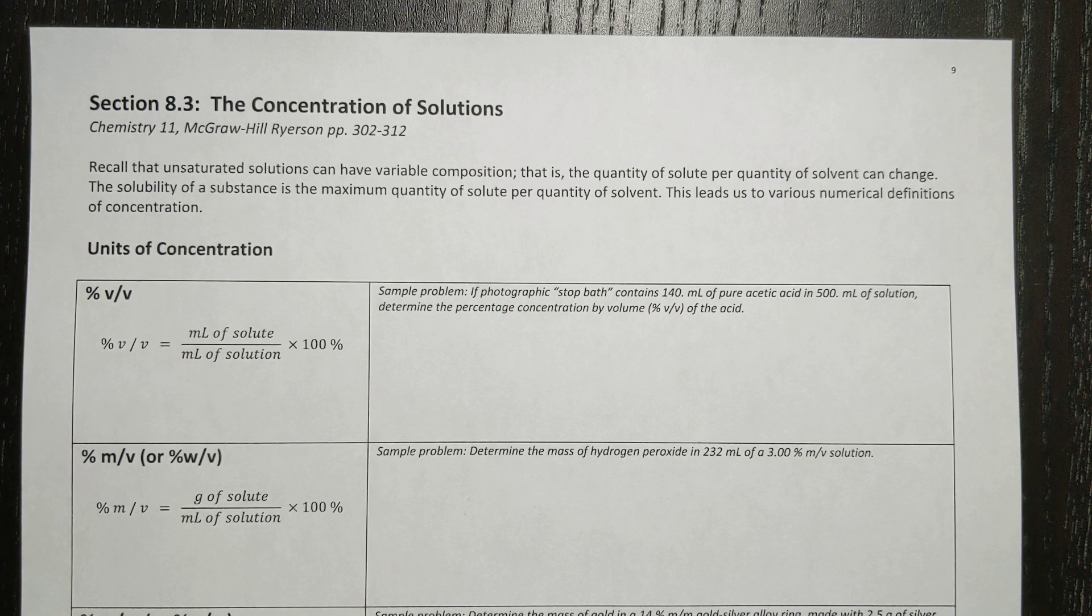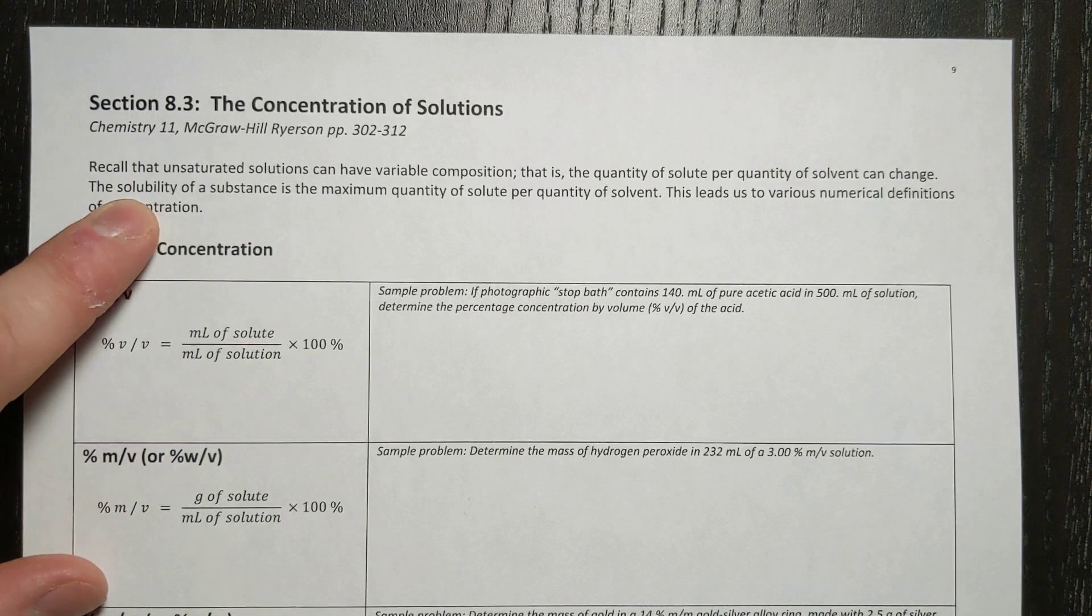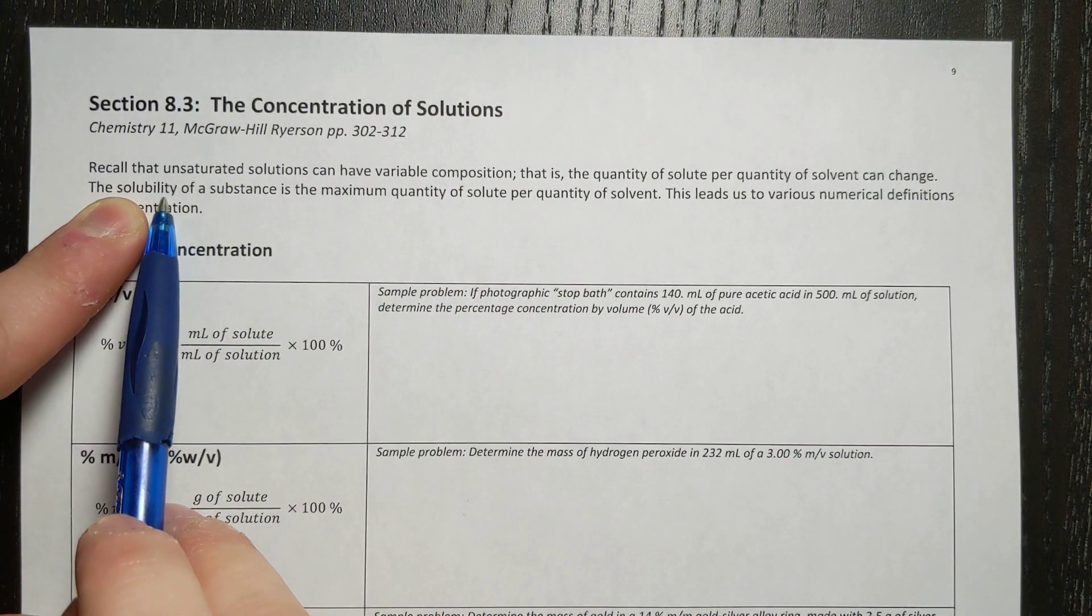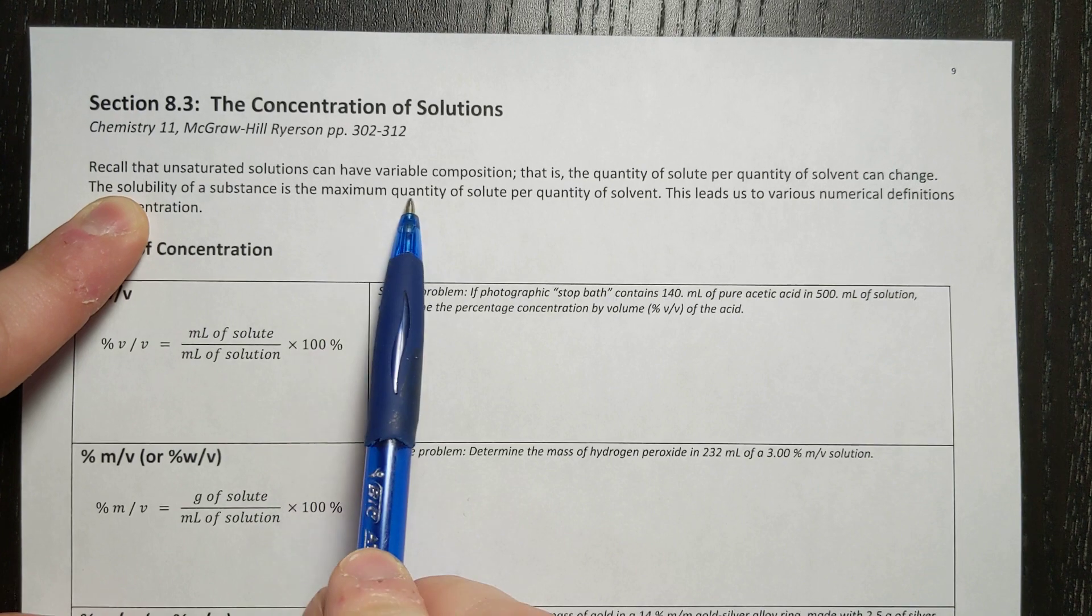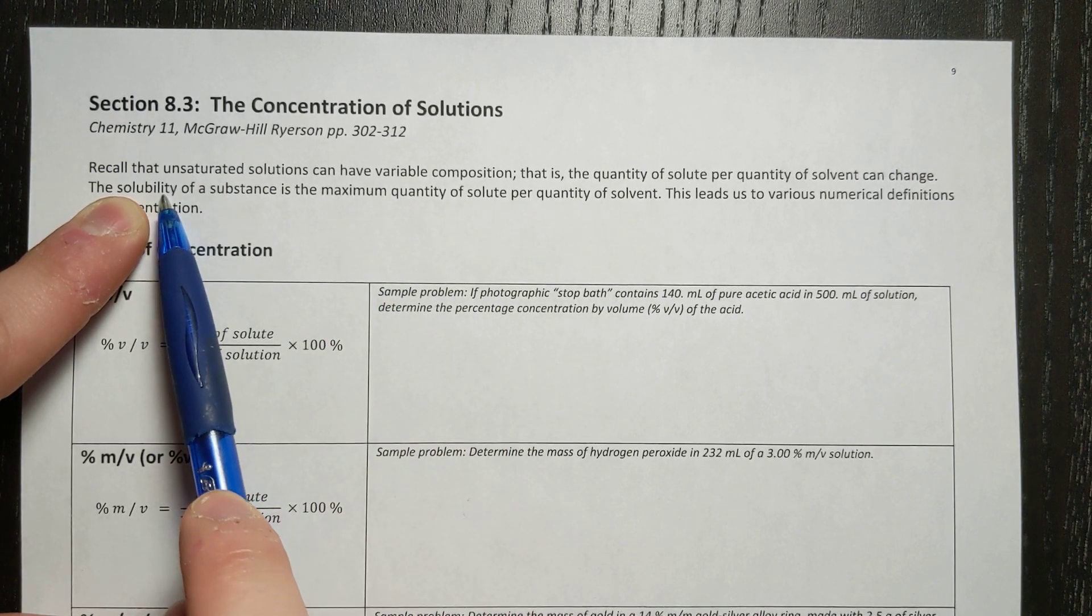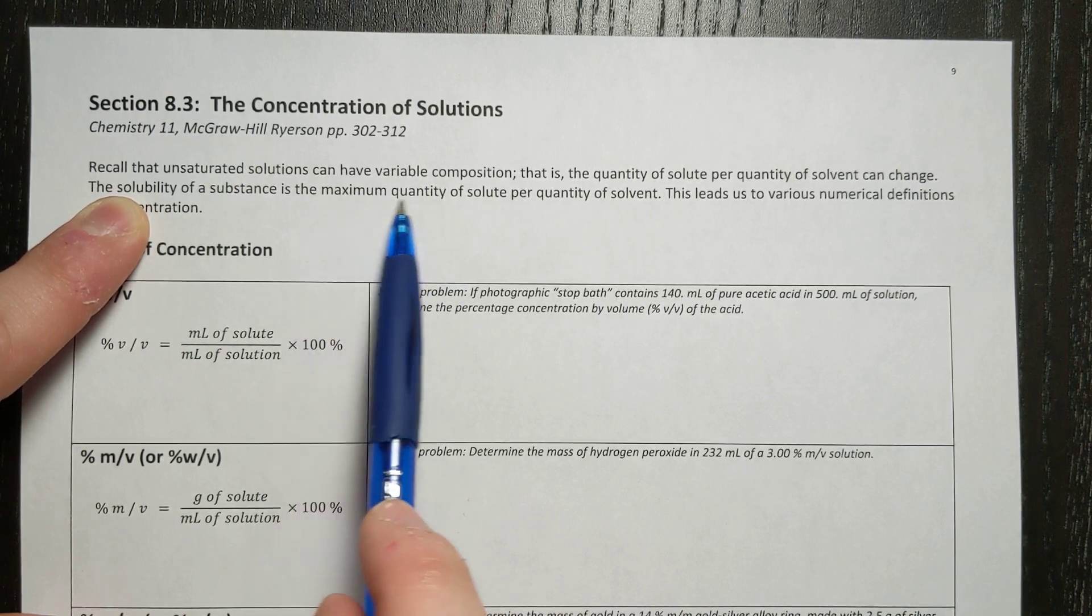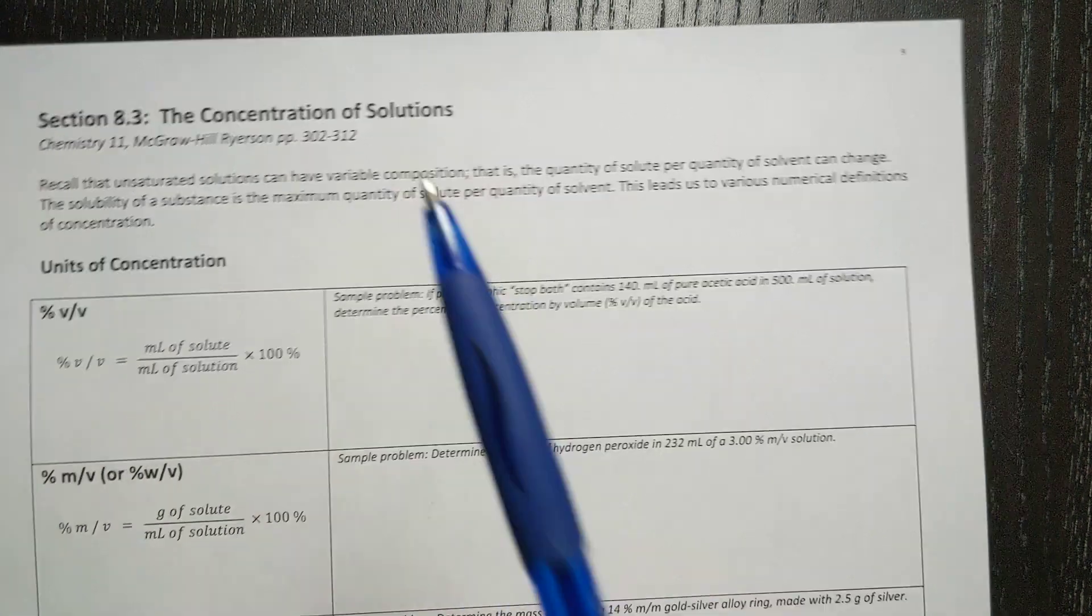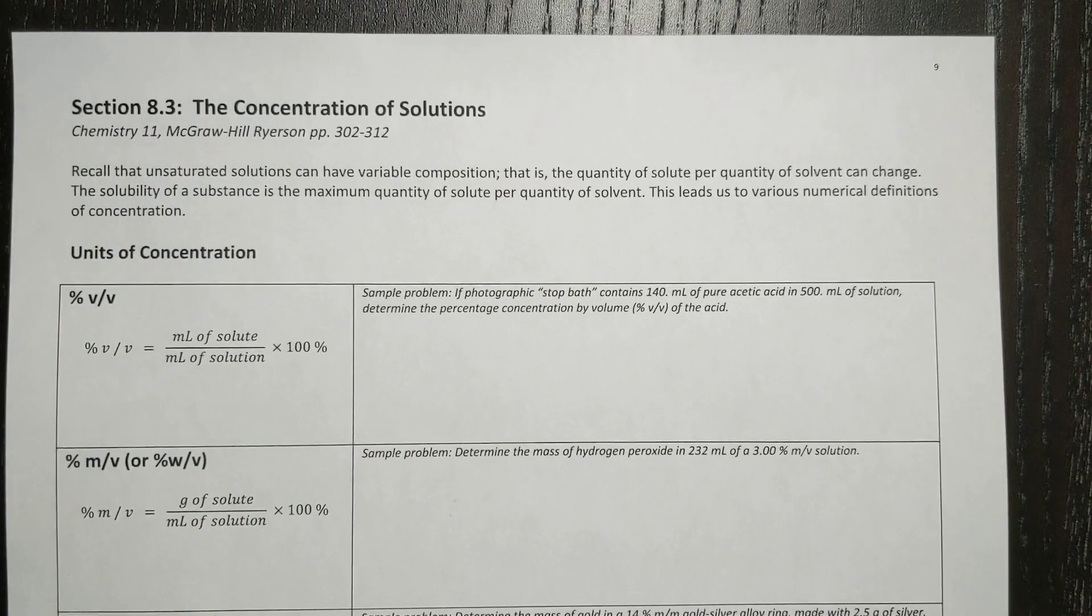The solubility of a substance is the maximum quantity of solute per quantity of solvent. So solubility, again, that is a very key word. Solubility means the maximum quantity of solute per solvent. Solubility relates to saturation. When solubility is the saturation level of the solute per solvent.